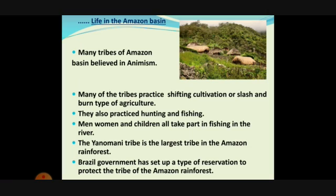Many of the tribes practice shifting cultivation and slash-and-burn agriculture. They clear a piece of land, set it on fire so that all plants and vegetation burn, and the area becomes full of ash. Then they cultivate the land for two or three years. Once the soil fertility is exhausted, they leave that place and burn the next area. It is a primitive but common method used by these people for clearing forest and doing agricultural activity.